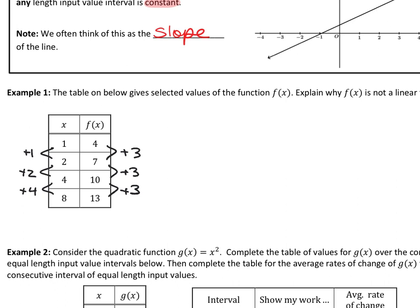Really, what you've been doing is a very simplified version of what we're going to do. What we're going to do is find the average rate of change in every single interval — meaning between 1 and 2. My inputs are 1 and 2, the outputs are 7 and 4. So the average rate of change is: 7 minus 4 is 3, 2 minus 1 is 1, so that rate of change is 3.